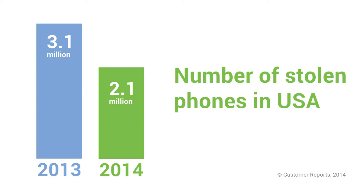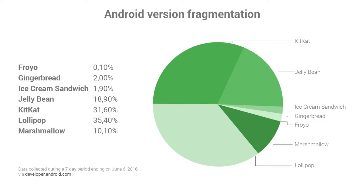Lost and stolen devices are also one of the major mobile threats, as these devices may contain personal or organizational sensitive data. We can name one more source of potential issues on Android devices — fragmentation, meaning fragmentation of Android OS versions distributed by carriers and to different vendors.